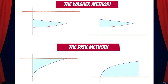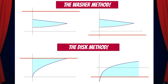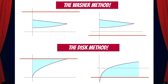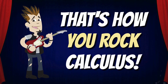So now we've seen examples of volumes of revolution around a horizontal line above and below a region using both disks and washers. Now you just need to practice. And that's how you rock calculus!